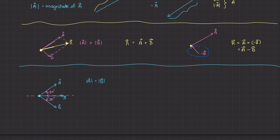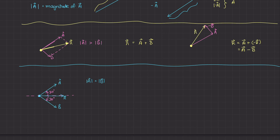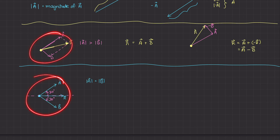When I draw the resultant vector from the particle to the tip of negative B, I get a new resultant vector R. You can see that its Y component is going to be a lot larger than the Y component from the previous example. This was simply the result of changing the orientation of vector B — showing how vector subtraction affects the resultant.